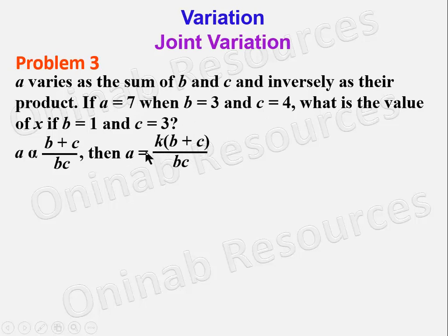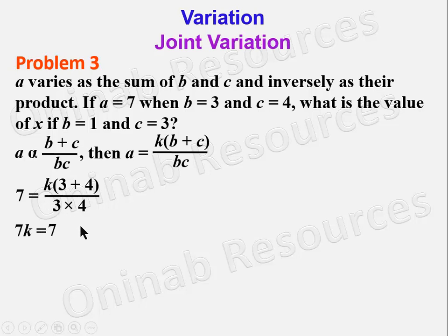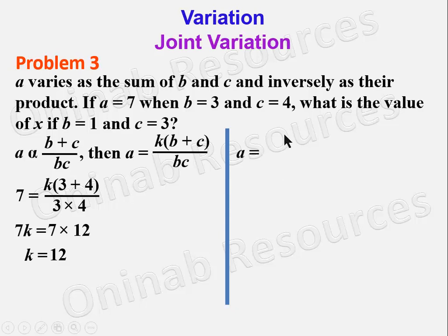Substituting a = 7, b = 3, c = 4: 7 = k(3 + 4)/(3 × 4) = 7k/12. So 7k/12 = 7, which gives 7k = 7 × 12. The 7s cancel, leaving k = 12. The formula is a = 12(b + c)/bc.